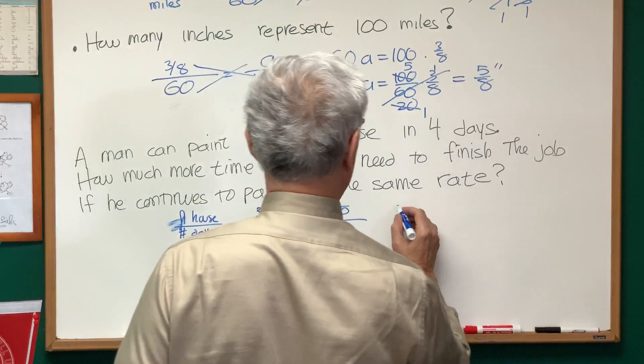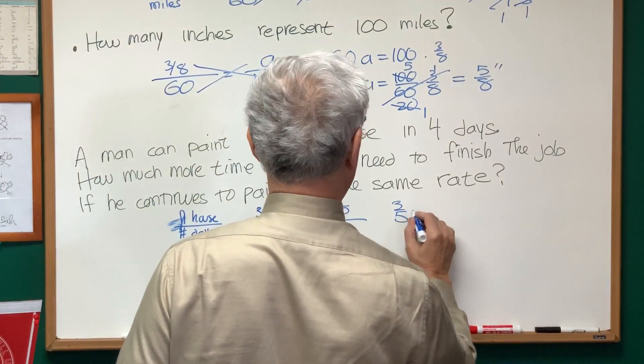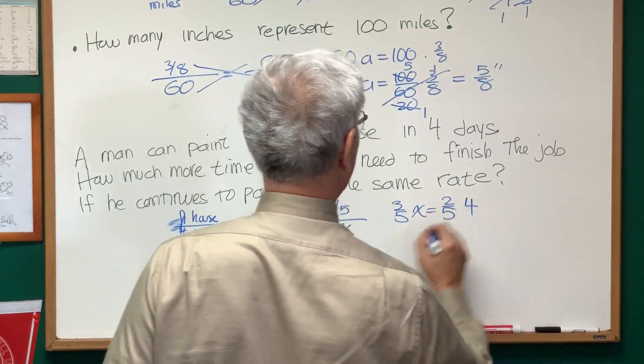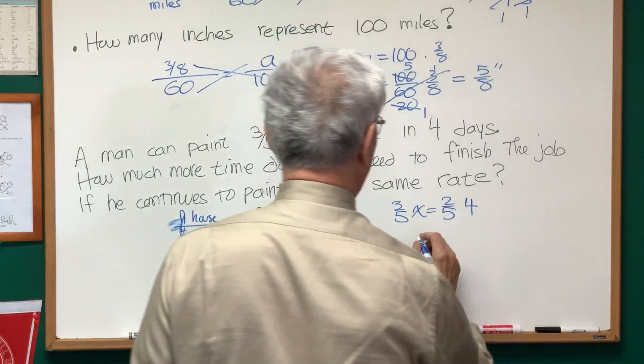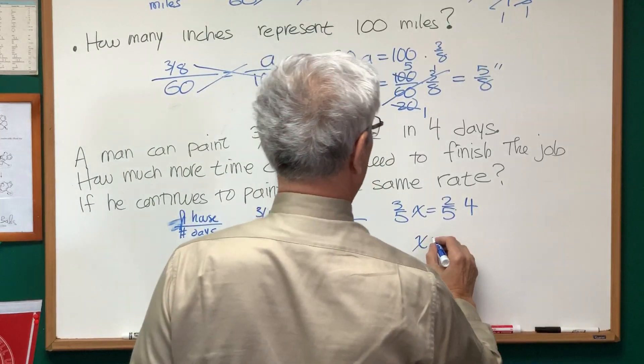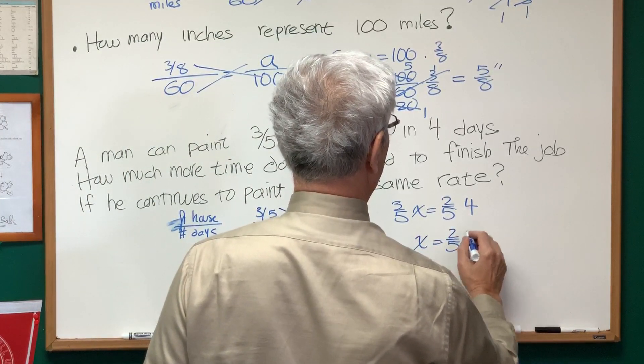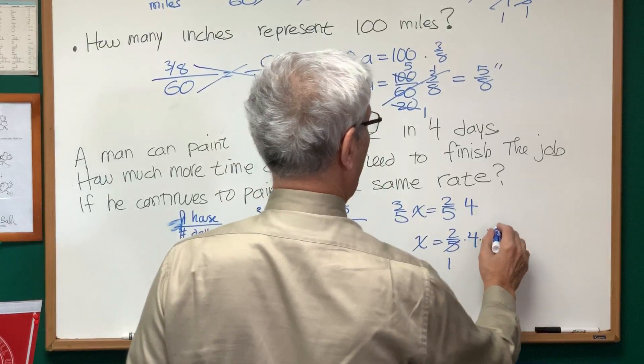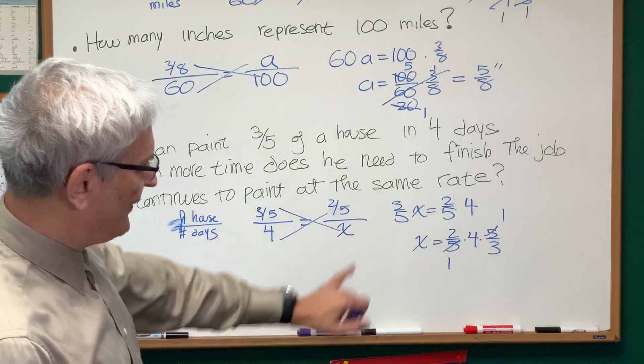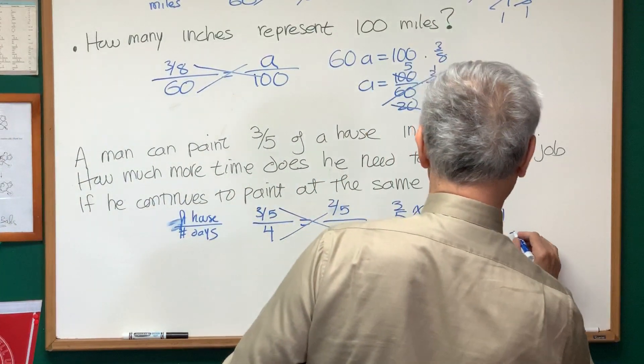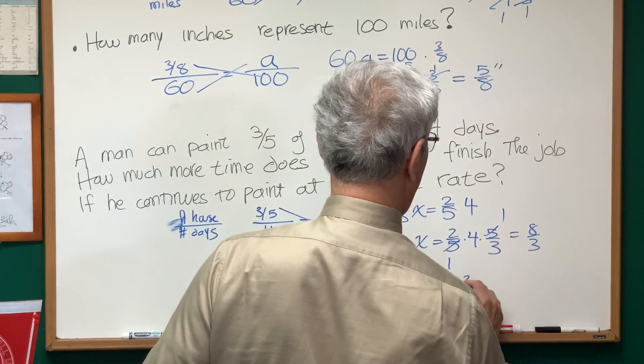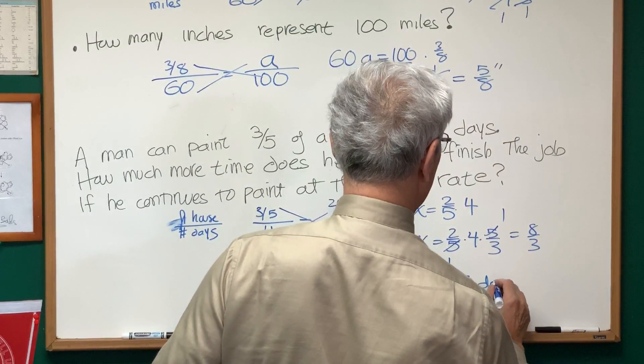Let's do cross multiplication. And we'll get three-fifths x equals two-fifths times four. Multiply both sides by five-thirds. Two-fifths times four times five-thirds. The fives will cancel. And we have two times four is eight over three. And that will be equal to two and two-thirds days.